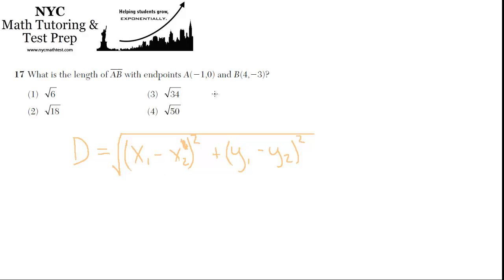So how do we use it? d equals x1 minus x2, so minus 1 minus 4, plus y1 is 0 minus negative 3. And that's being squared, and the whole thing is under square root.